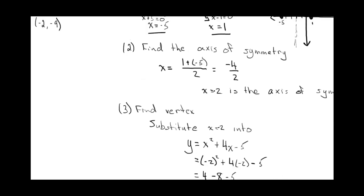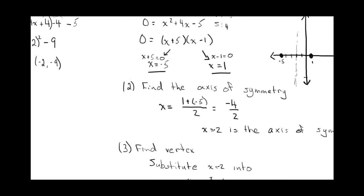Negative two, negative nine. So we can put that point on our graph. So down here, say that's negative nine. We got our vertex.